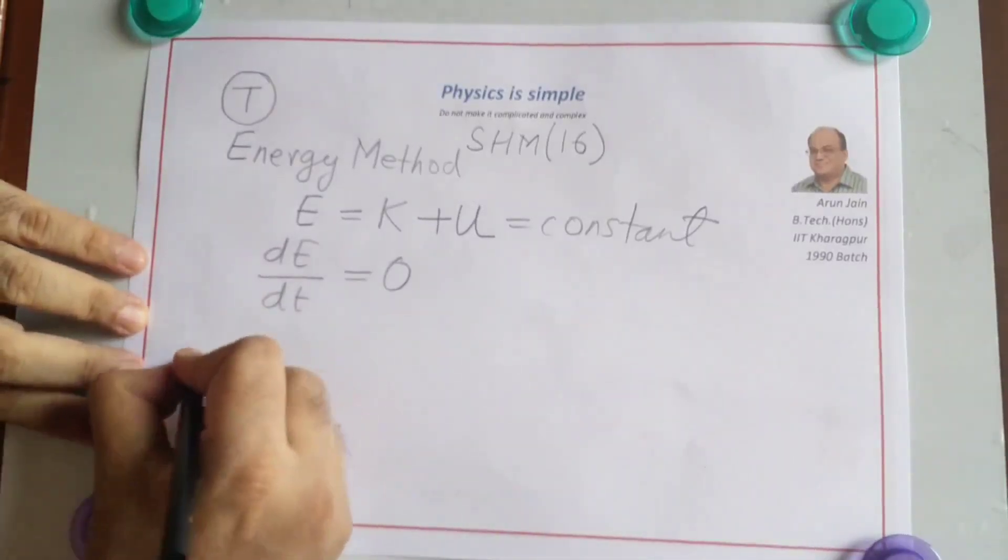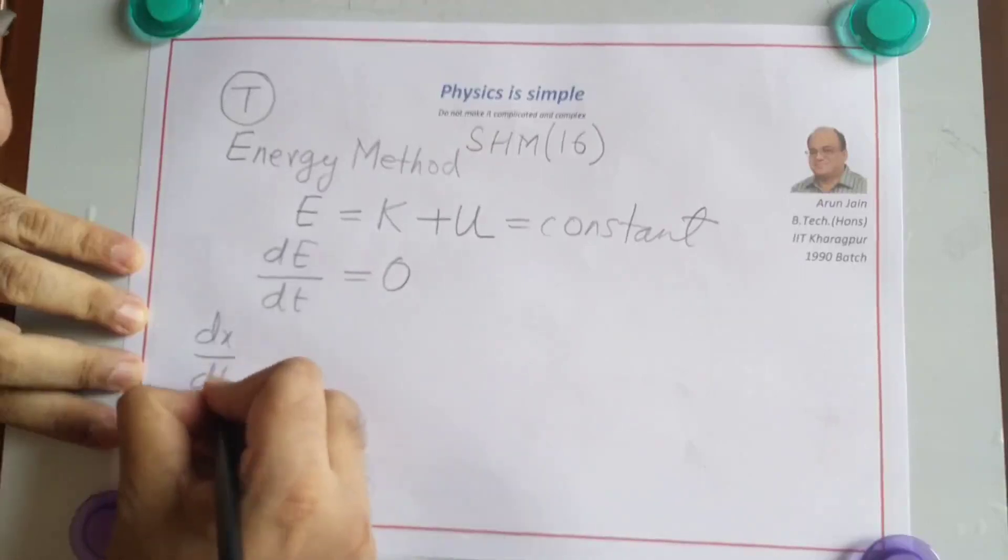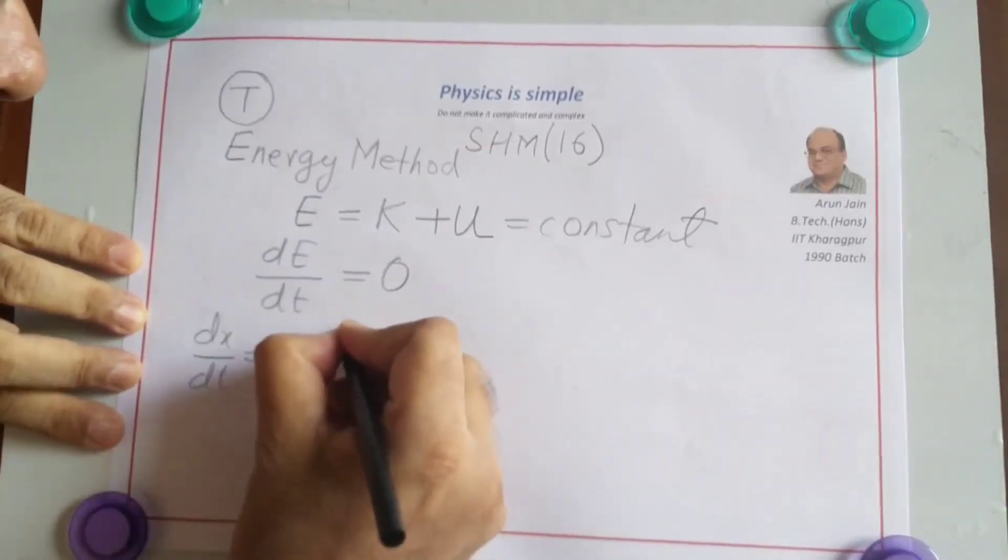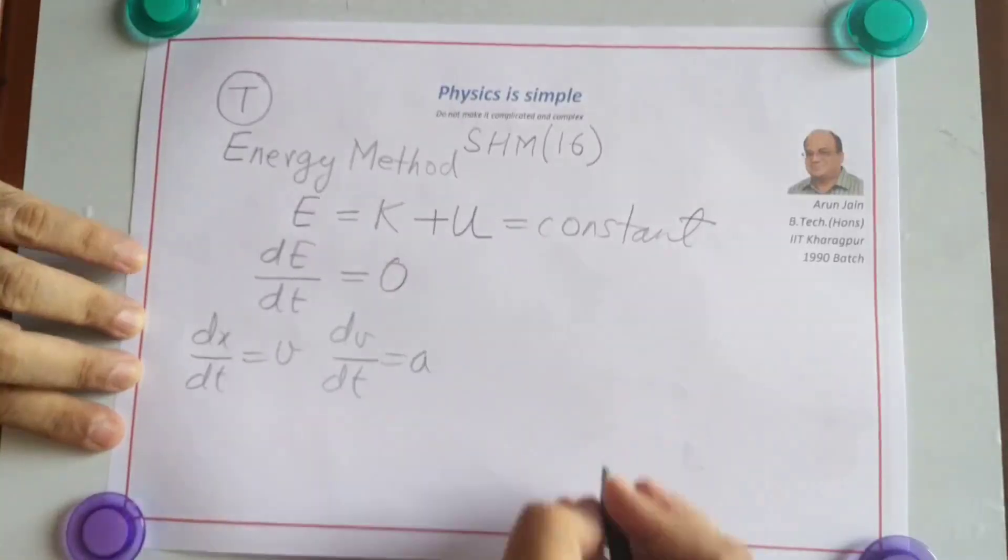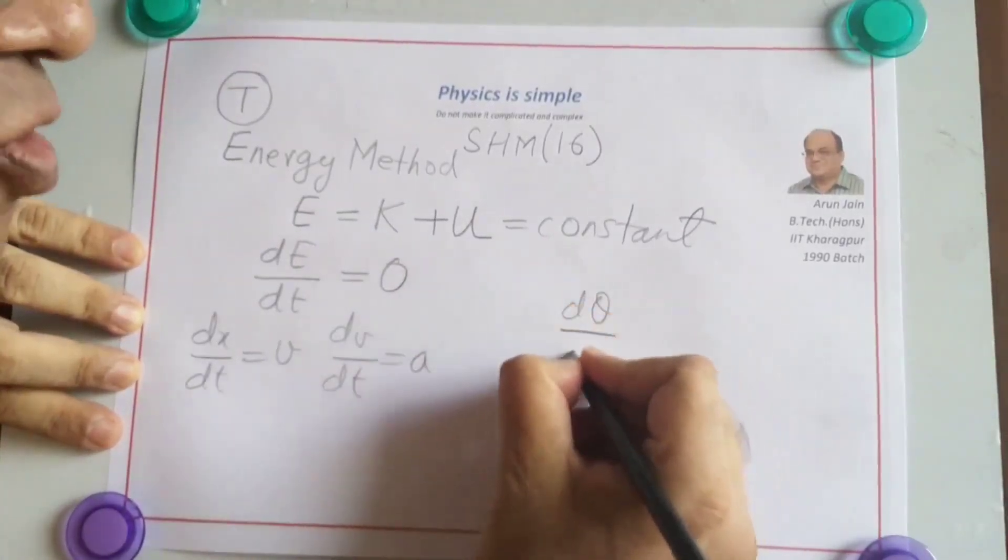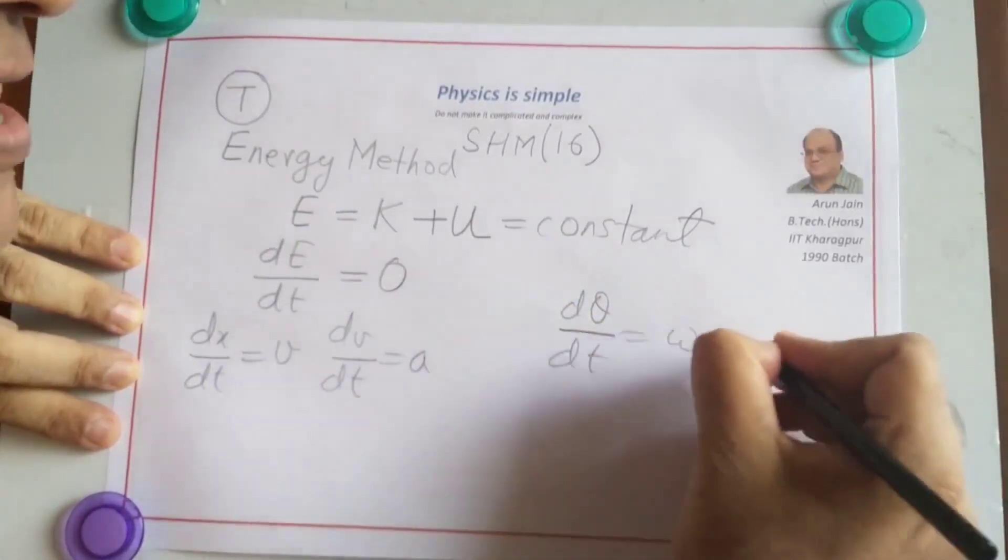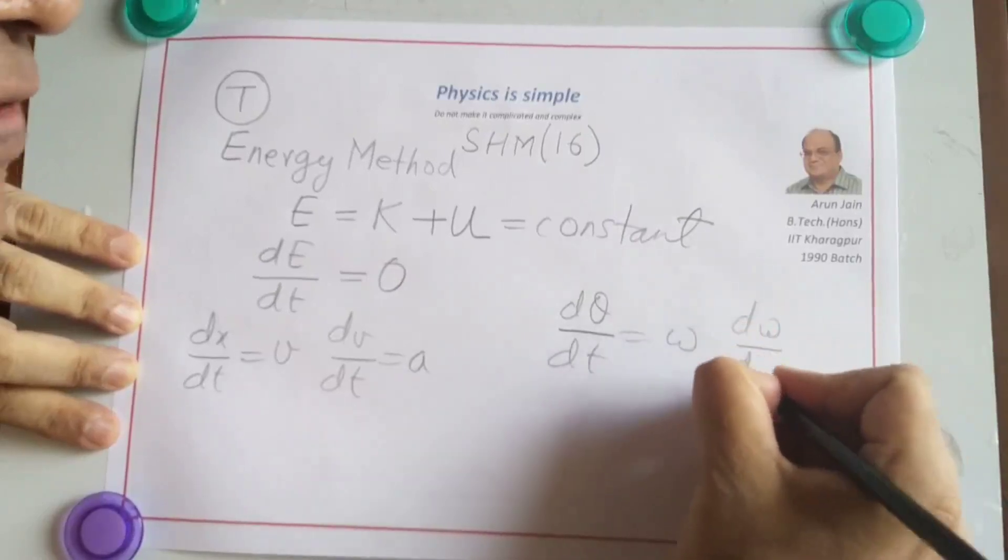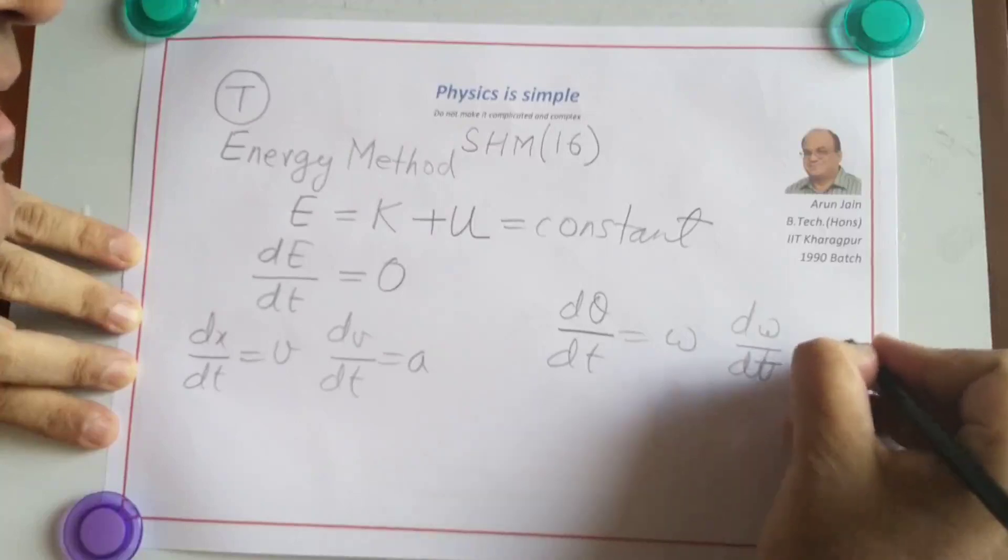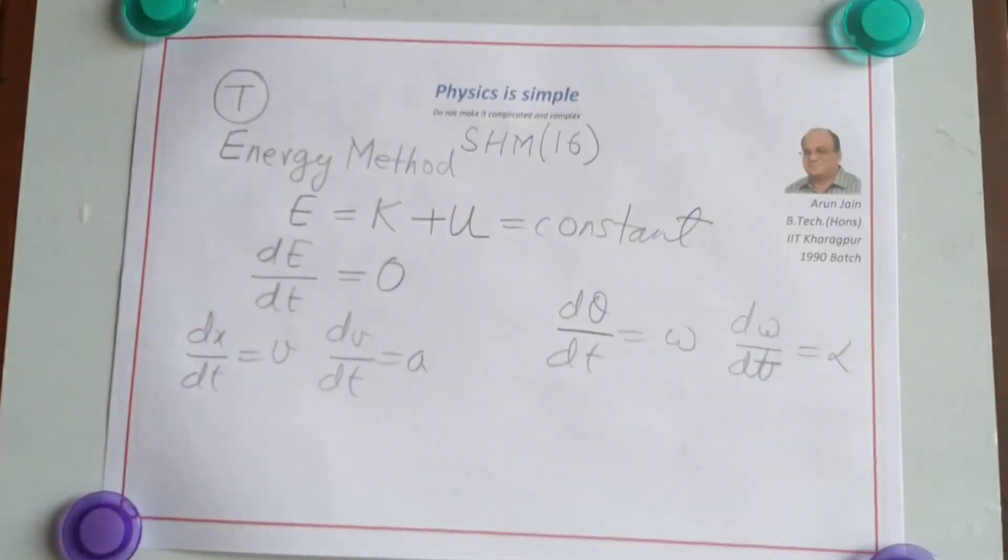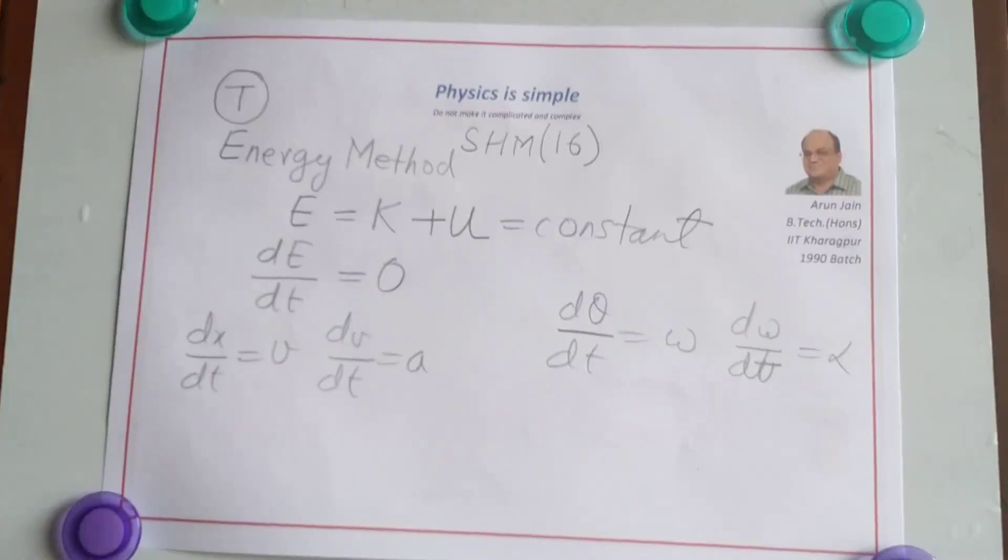If it is a linear SHM, dx/dt is v, dv/dt is a. If it is angular SHM, then dθ/dt is omega and dω/dt is alpha. So after we do this substitution, we come to step 5 and rest of the method is same.